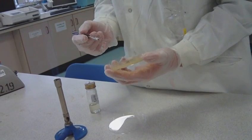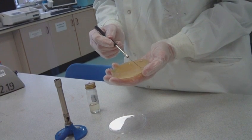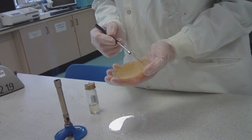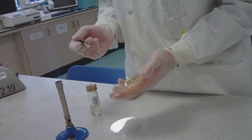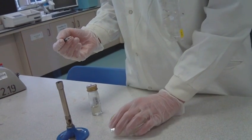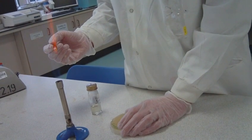Using the loop, streak the bacteria across the first quarter of the agar from the circle you just made in three to four lines going from 12 to 3 o'clock. Remove the loop and close the petri dish.